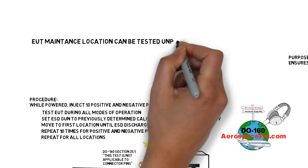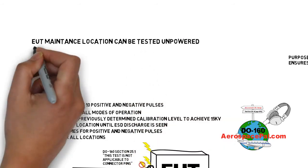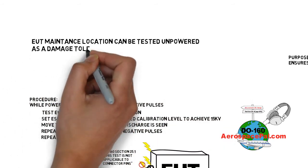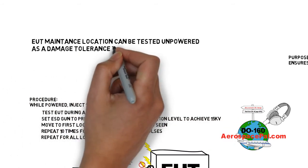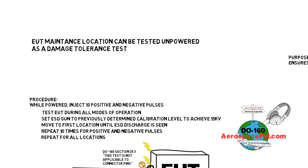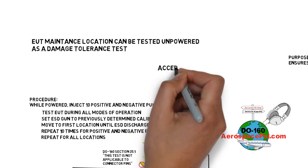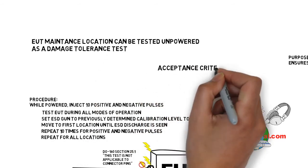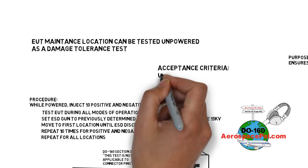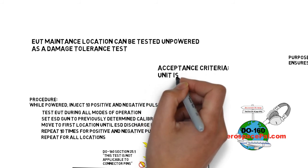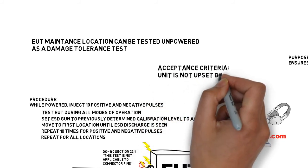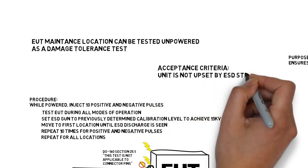DO-160 says that EUTs with test points that are accessed only during maintenance activities can be a damage tolerance test. However, this typically is run as an upset tolerance test. So monitor your EUT during the 10 positive and 10 negative pulses and ensure that you pass.